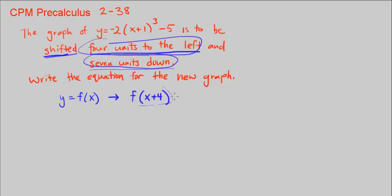7 units down means outside the parentheses, we want to add negative 7, or you can say subtract 7. Either way. So that's given y being f(x).